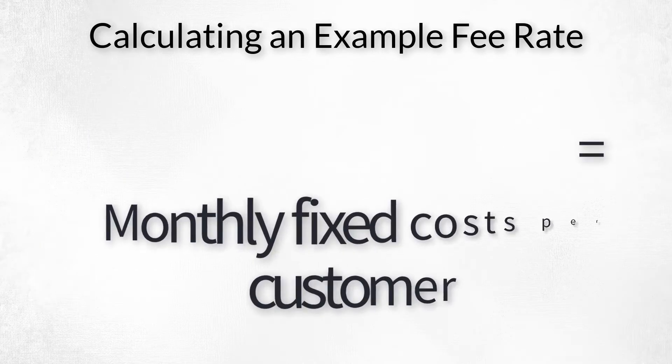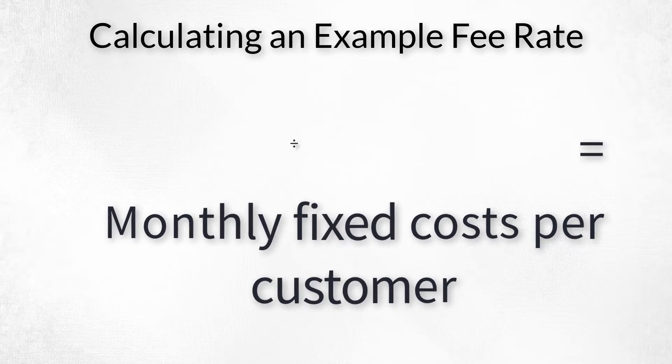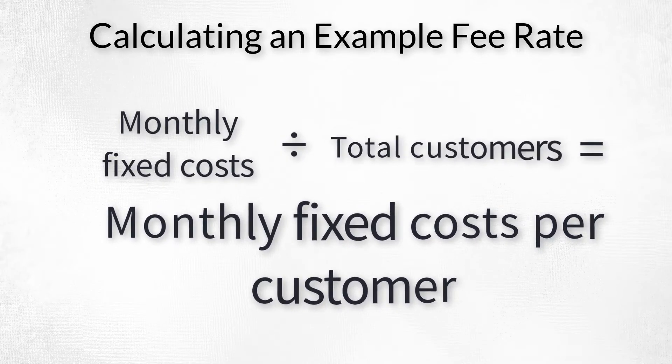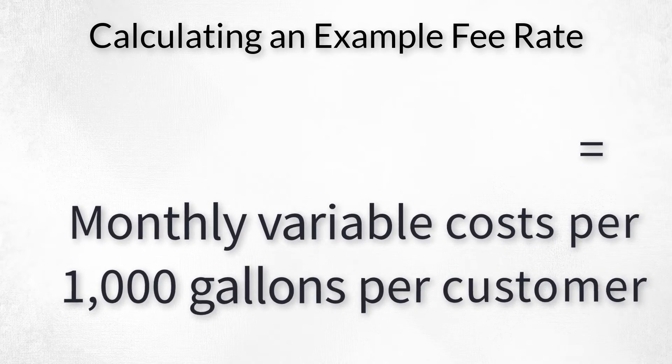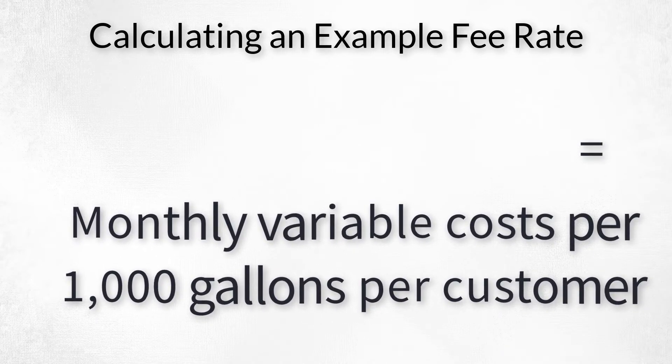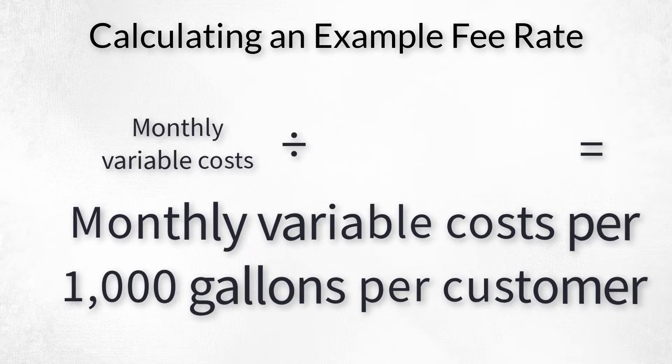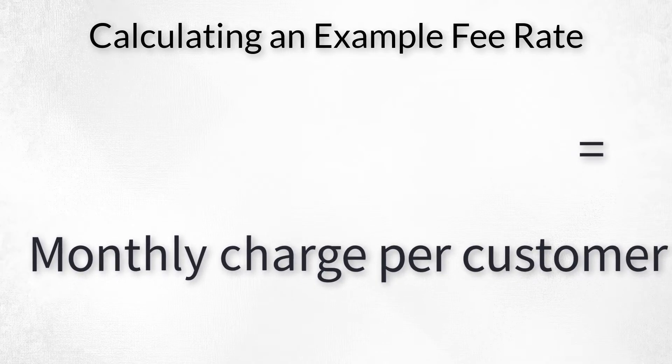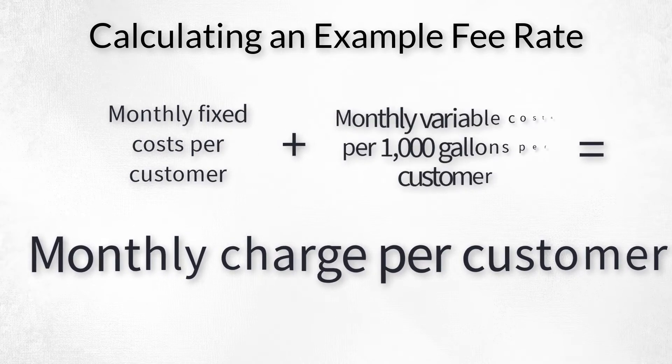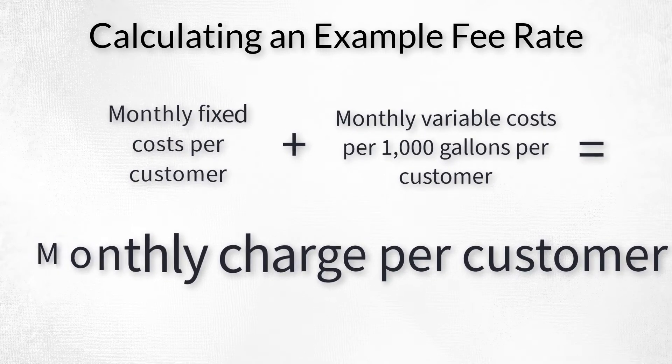Third, determine monthly fixed cost per customer: divide monthly fixed costs by total number of customers. Fourth, determine monthly variable costs per 1,000 gallons per customer: divide total monthly variable costs by the total average customer water use divided by 1,000. Fifth, calculate the total monthly charge per customer: monthly fixed cost per customer plus monthly variable cost per 1,000 gallons per customer.